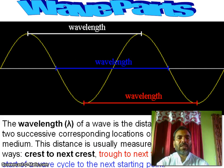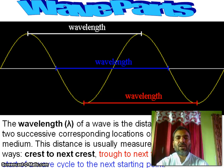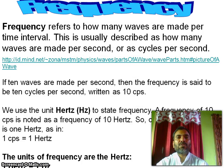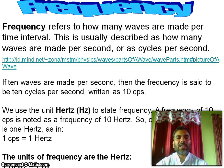The amplitude is the maximum positive or negative displacement from the raised position of the medium to the top of a crest or to the bottom of a trough. The wavelength of a wave is the distance between any two successive corresponding locations on the wave medium. This is usually measured in one of three ways: crest to next crest, trough to next trough, or from the start of a wave cycle to the next starting point. Frequency refers to how many waves are made per time interval, usually described as cycles per second. We use the unit hertz to state frequency.